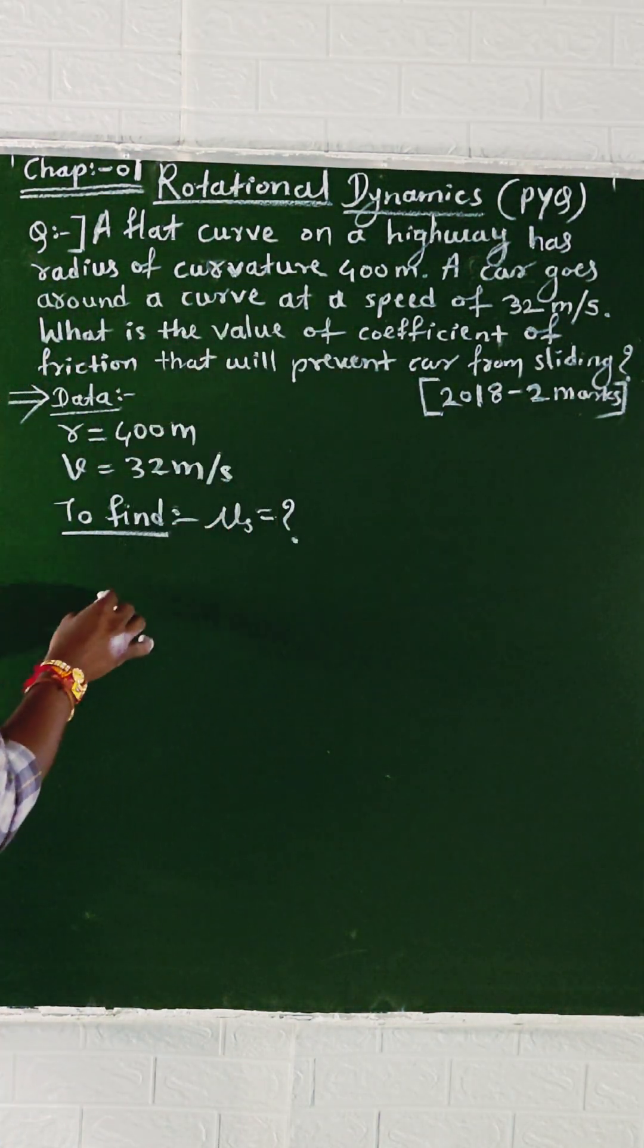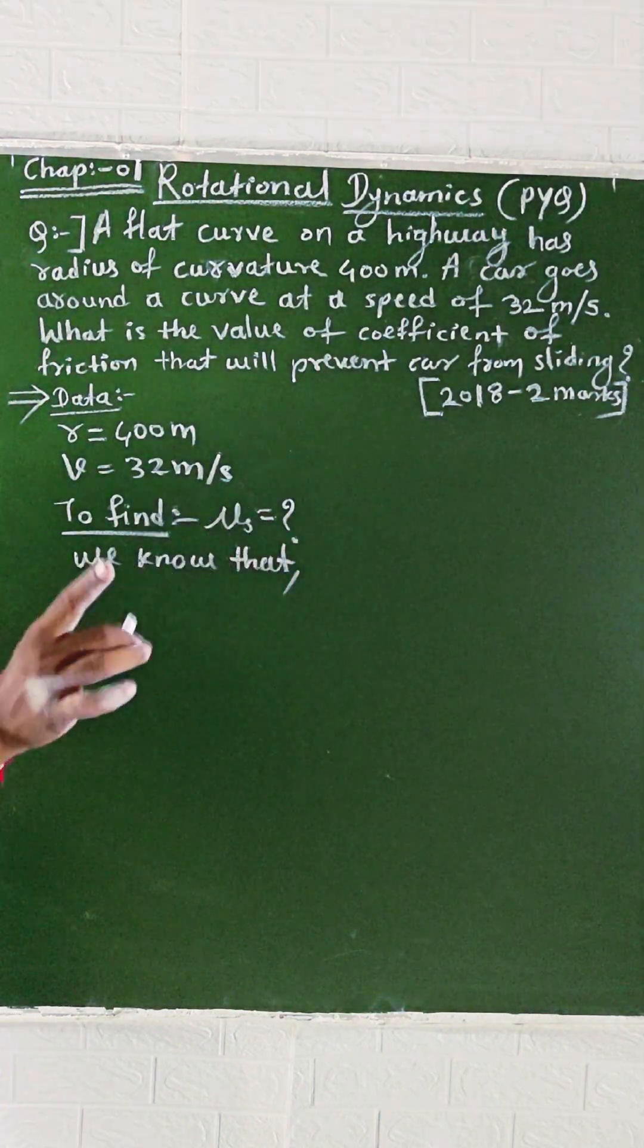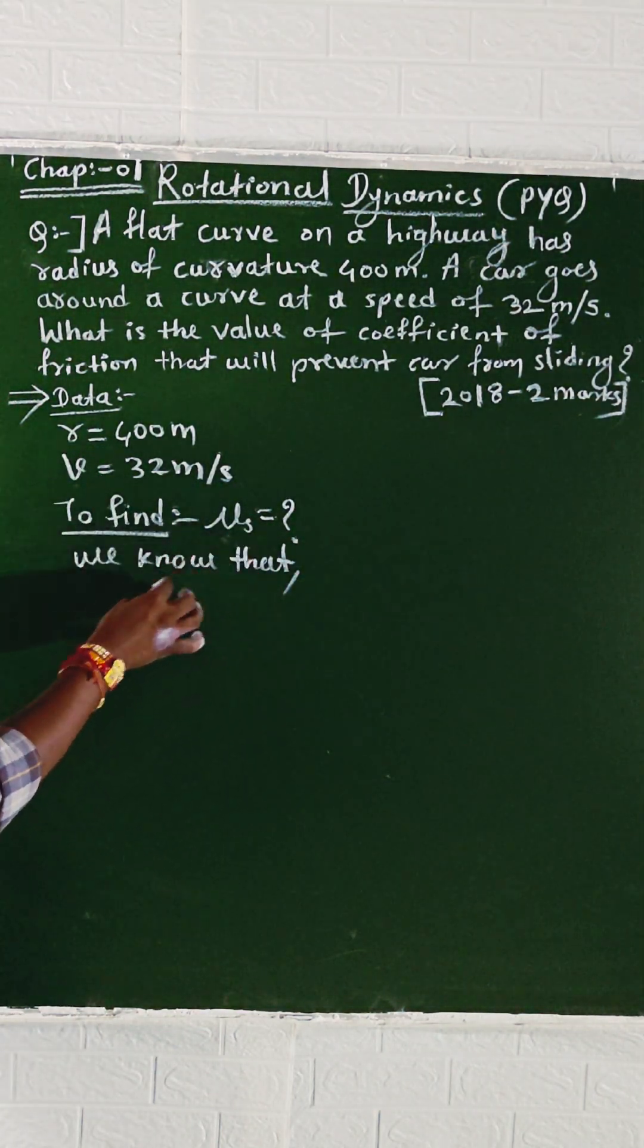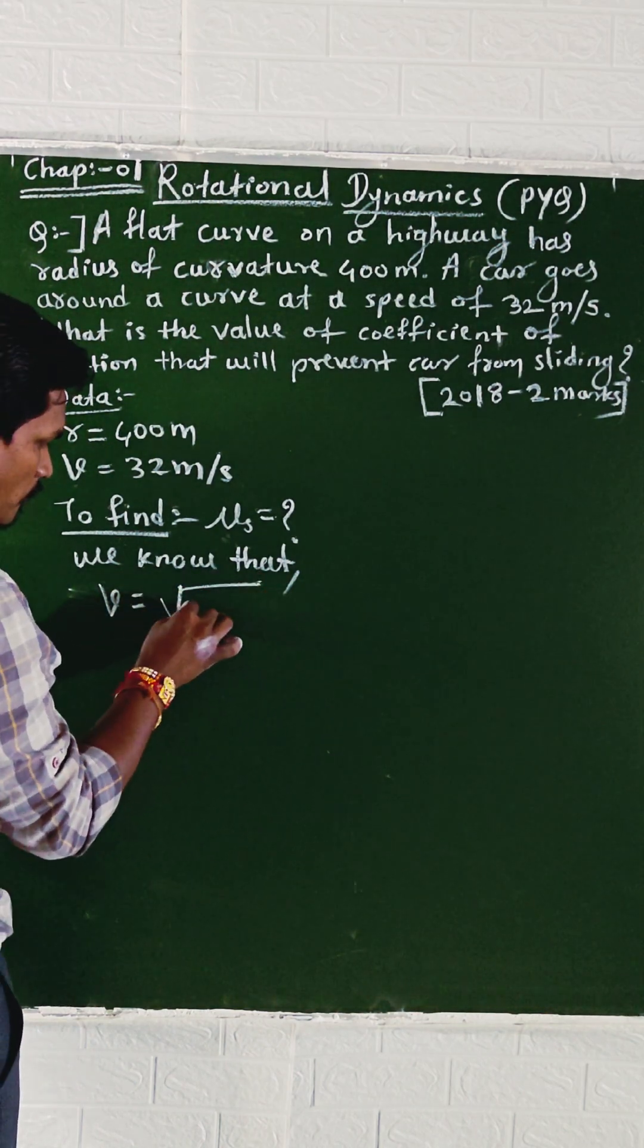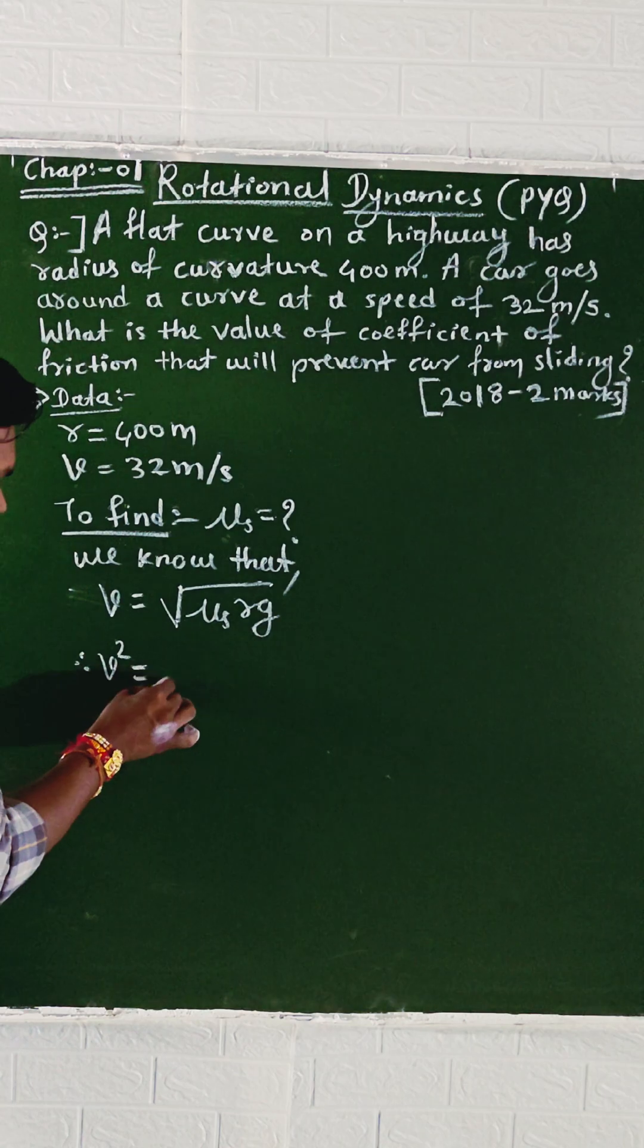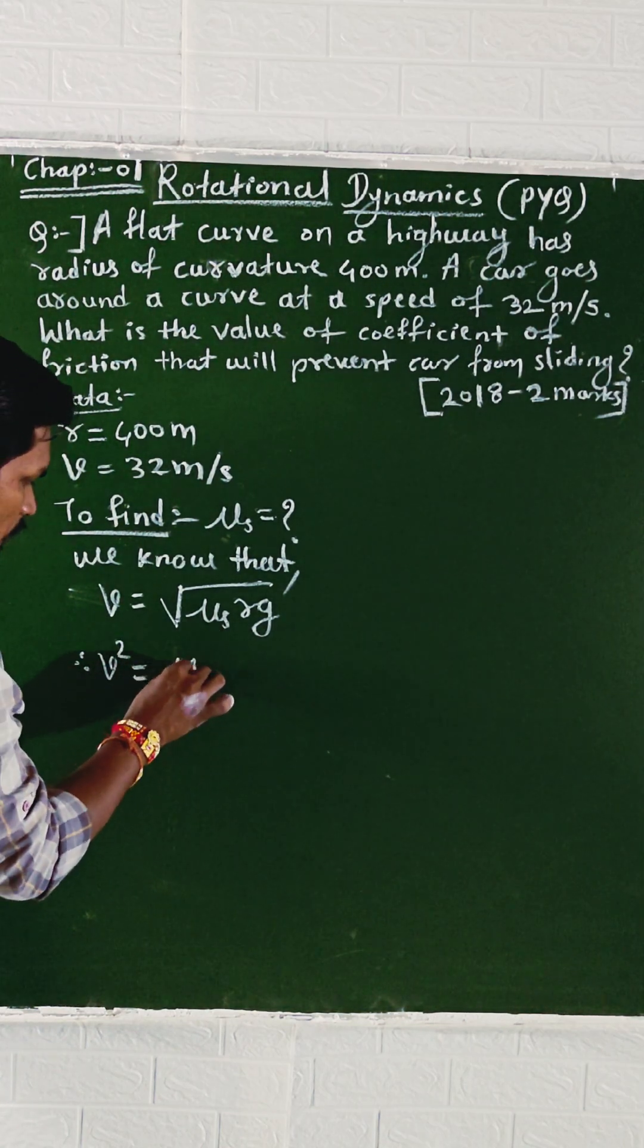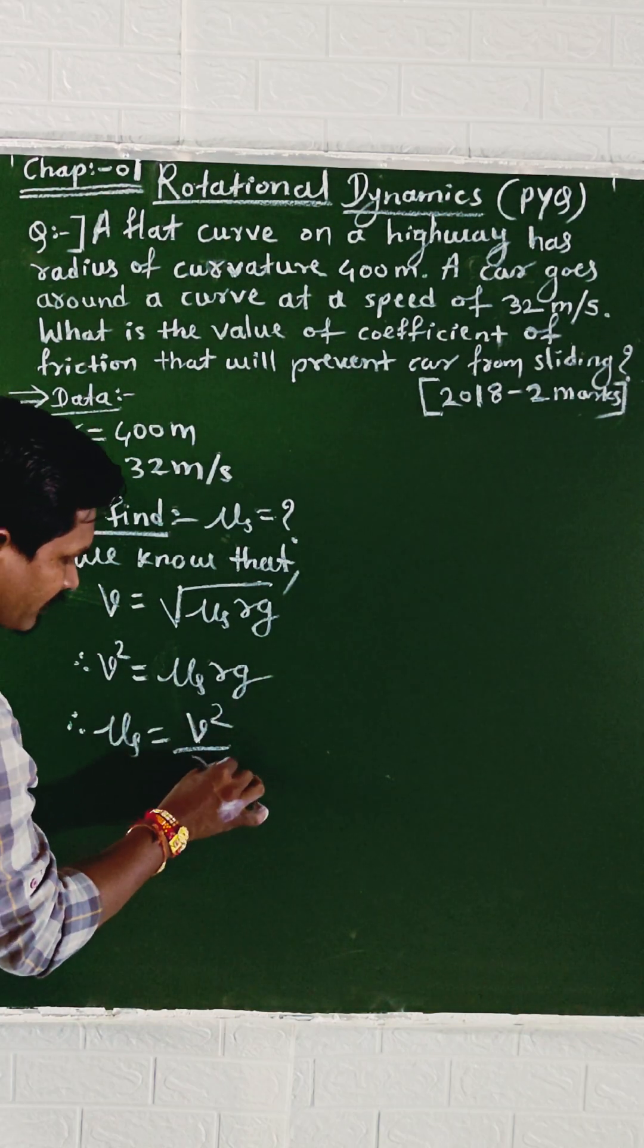For the solution, we know that V equals square root of mu times R times G. Squaring both sides, V squared equals mu times R times G. Therefore, mu equals V squared divided by RG.